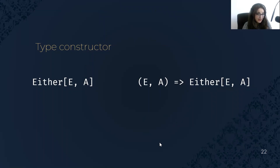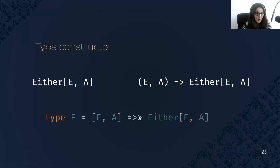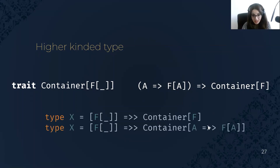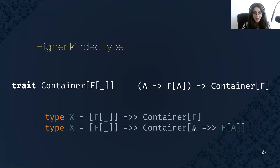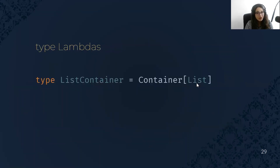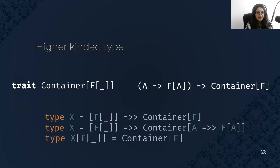For a type constructor like Either that takes two type parameters, it is like a function that has two arguments — here is how we define it using type lambdas. For a higher-kinded type, a trait Container that takes a type constructor with one type parameter F is equivalent to a higher-order function. We can write this using type lambdas. We can define a Container of type List because List has the same kind as the type parameter of Container.